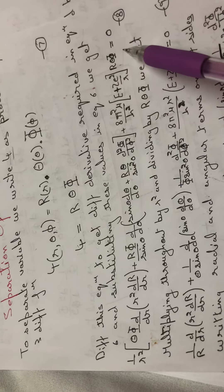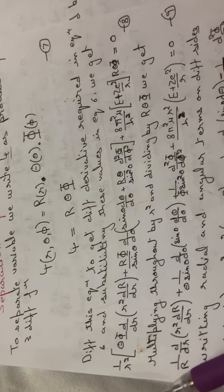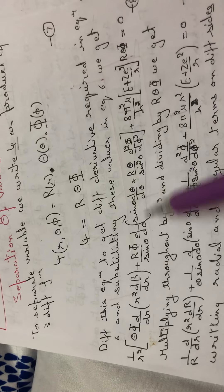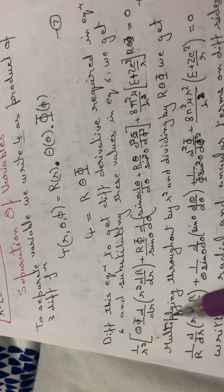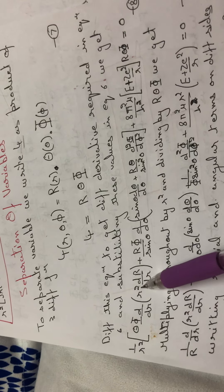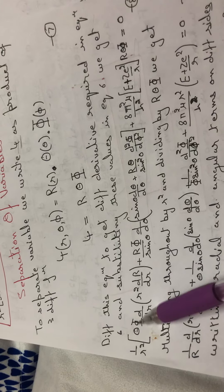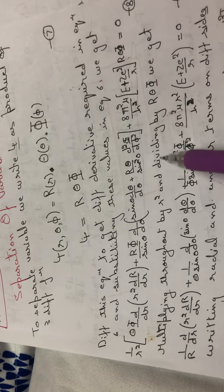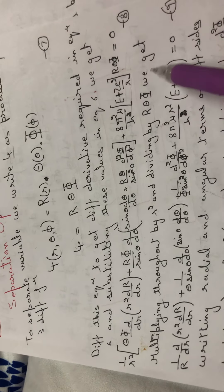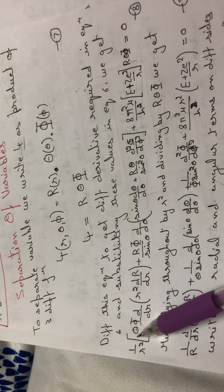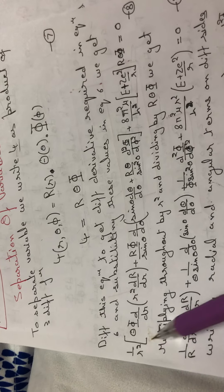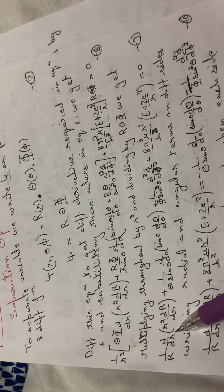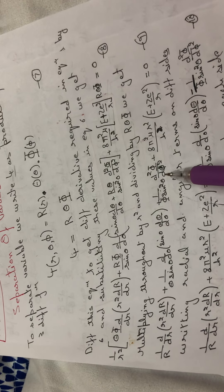After substituting, we obtain an equation with three terms. We want each term to contain only one type of variable. To achieve this, we multiply throughout by r² and divide by R·Θ·Φ. This causes cross terms to cancel, so that one complete term contains only R (the radial variable r) and the remaining terms contain only θ and φ.